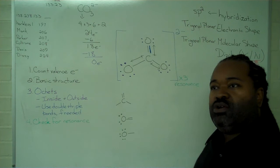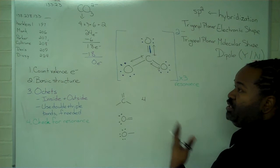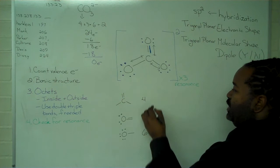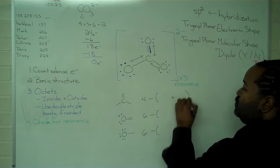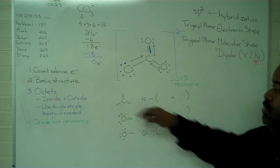So in finding out a formal charge, we want to compare what the arrangement of electrons are before bonding, meaning valence electrons. So carbon has four, oxygen has six. And what we're comparing against is what the situation is with electrons after forming the molecule.